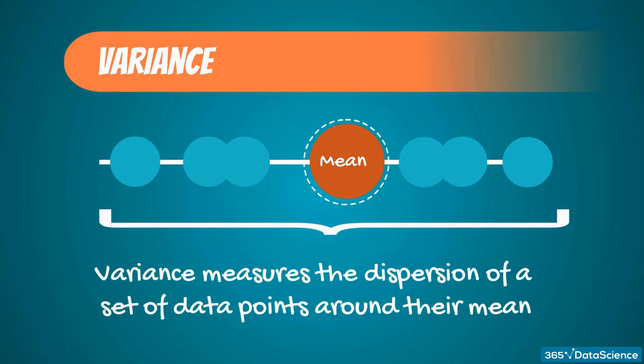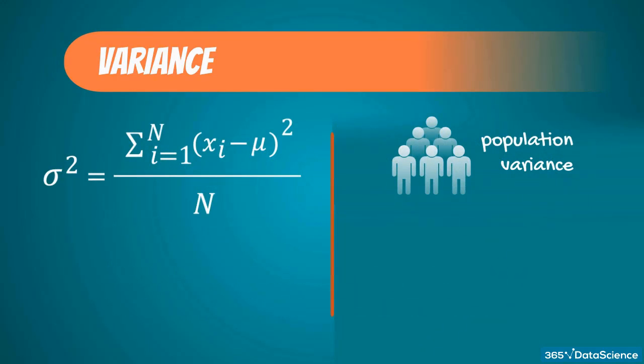Variance measures the dispersion of a set of data points around their mean value. Population variance, denoted by sigma squared (σ²), is equal to the sum of square differences between the observed values and the population mean, divided by the total number of observations.